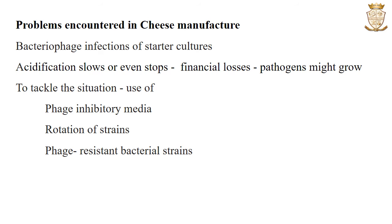Let us look at the problems generally encountered in cheese manufacture. Bacteriophage infection of the starter culture is a major problem in cheese fermentation. When this occurs, acidification slows or even stops, causing financial losses to the producer and an increased risk that pathogens will grow in the milk and curd, thereby spoiling the cheese. An important source of phage in cheese making is the starter cultures themselves, which carry lysogenic phages that may be induced into a virulent state later. This problem could be avoided by the use of phage-inhibitory media, rotation of strains and phage-insensitive bacterial strains; however, phage infections continue to cause problems in the cheese industry.